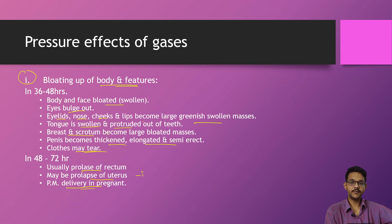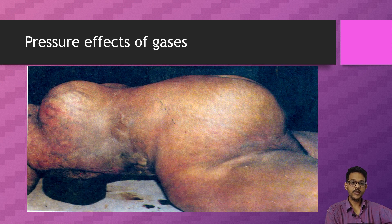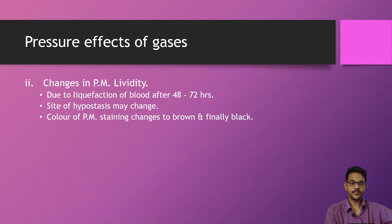The accumulated gases lead to prolapse of the rectum and prolapse of the uterus in females. If the woman is pregnant, postmortem delivery may also happen due to the effect of gases pushing out organs from the body. This is a putrefaction effect where the body parts are displaced and the body is fully bloated due to decomposition gases.